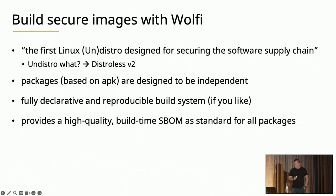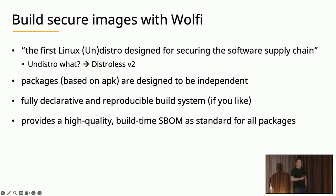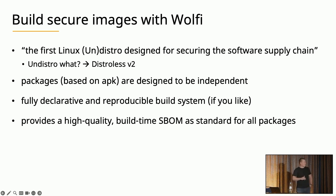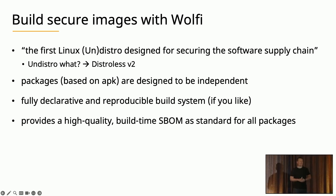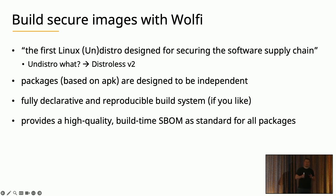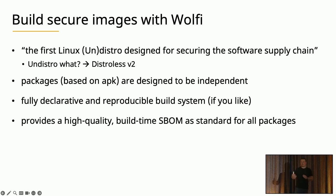Starting with Wolfi: it's an open-source tool mainly developed by Chainguard. From their website: 'We are the first Linux undistro designed for securing the software supply chain.' So what is an undistro? Basically it's distroless version 2. Chainguard has some of the original distroless developers from Google, and they rethought the distroless design and built Wolfi — a small, secure Linux environment stripped down to securely run containerized workloads.